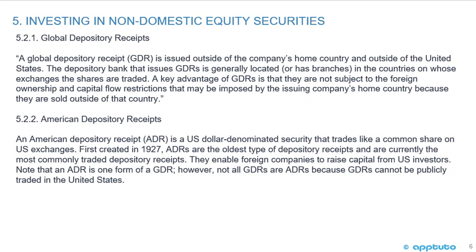An American depository receipt (ADR) is a U.S. dollar-denominated security that trades like a common share on U.S. exchanges. First created in 1927, ADRs are the oldest and most commonly traded depository receipts, enabling foreign companies to raise capital from U.S. investors. Note that an ADR is one form of a GDR; however, not all GDRs are ADRs because GDRs cannot be publicly traded in the United States.